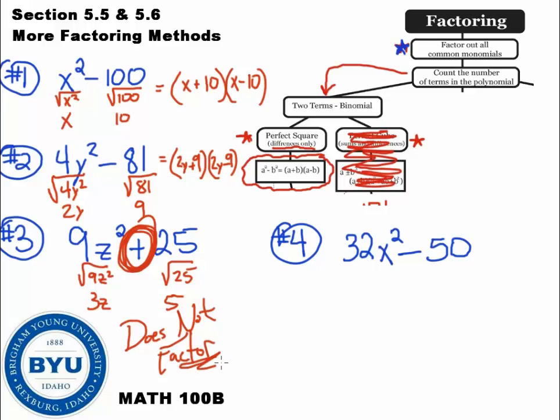So be careful on that. If you see a plus, those do not factor. Okay, number four. Factor out the common stuff. Any common stuff here, it looks like a 2. So I'm going to factor out the 2.